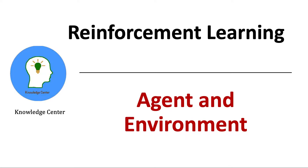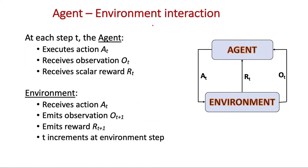Agent and environment are the two important components of reinforcement learning. At each time step T, the agent executes an action A, and in turn receives a reward corresponding to the previous action and some observation. The environment receives the action and emits an observation OT+1 and RT+1. So whatever action the agent took in the previous time step, the environment sends a reward in the next time step along with the corresponding observation, and we increment T at the environment step.